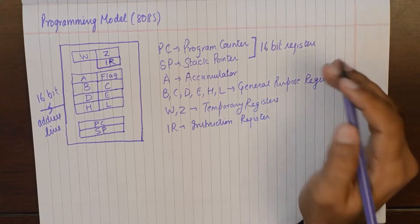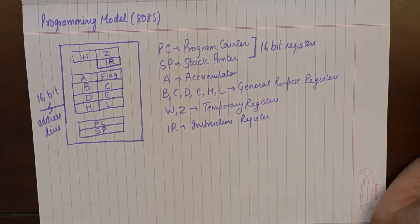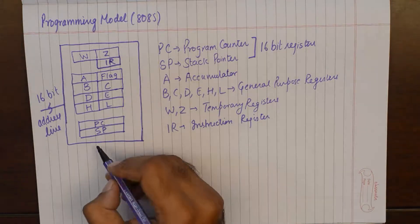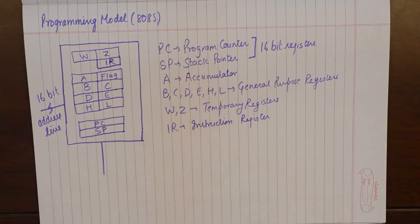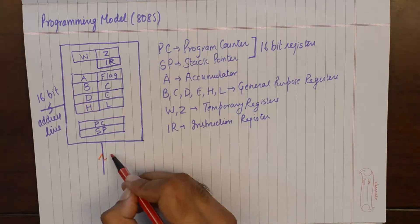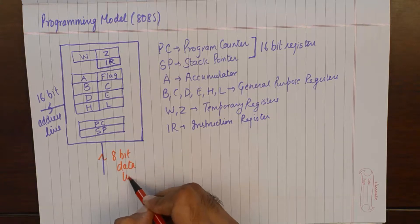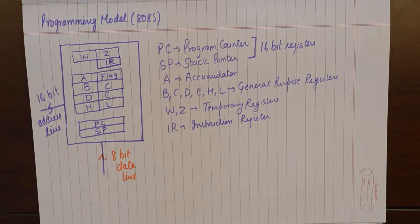Because they have to hold a memory address which is 16 bit long. Now we also know that the 8 bit data line of 8085 will accommodate only 8 bits of data transfer to and from the memory. So if I were to bring something from an external memory, I can only bring 8 bits of data.